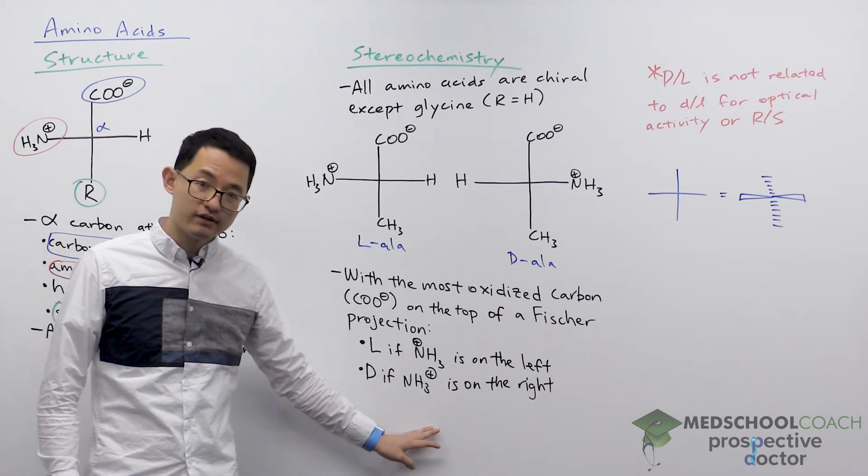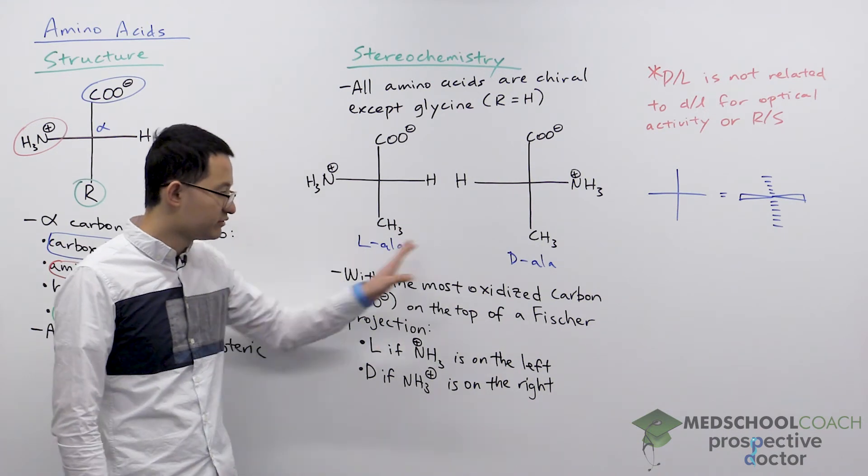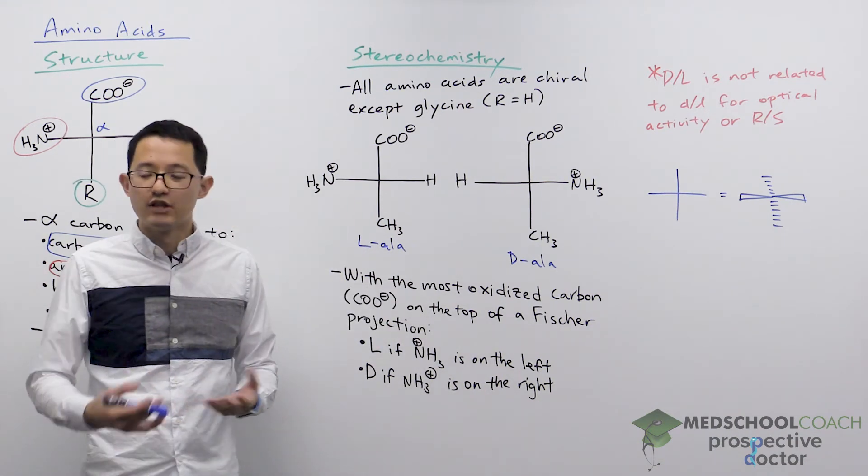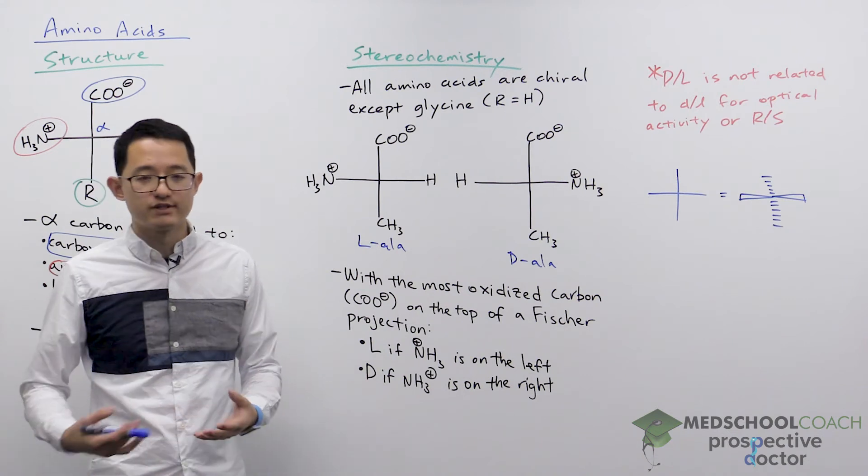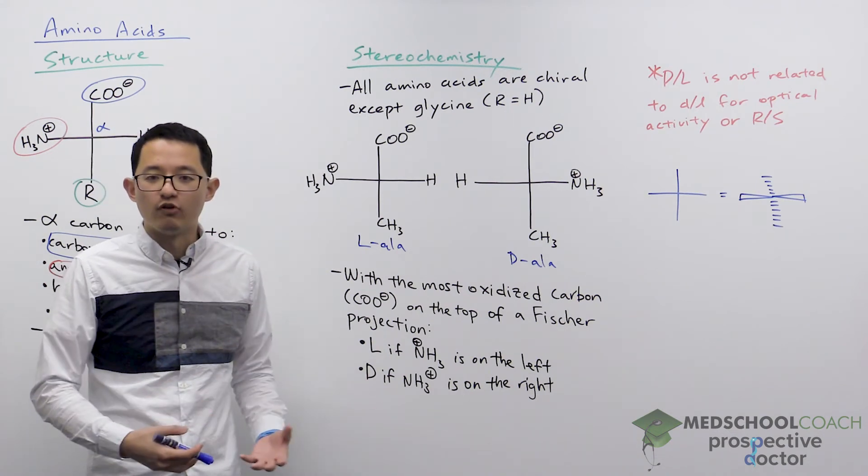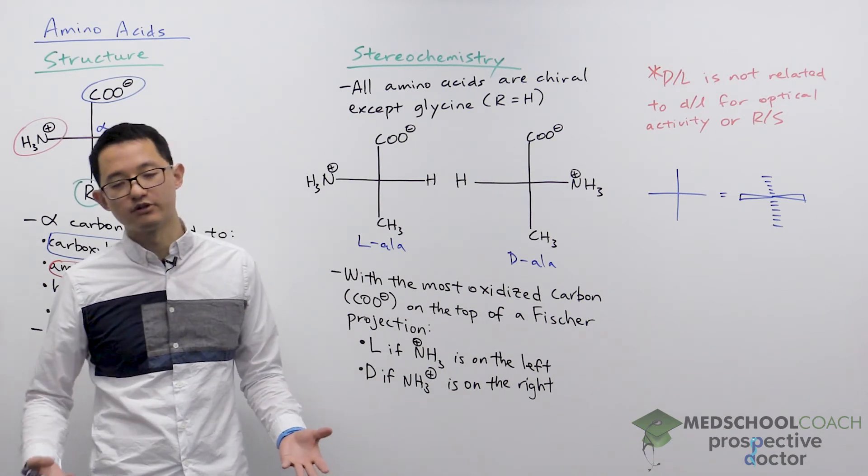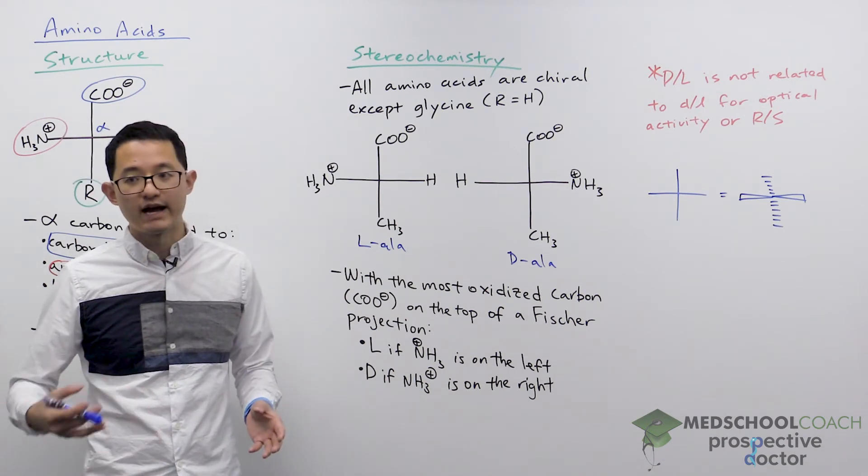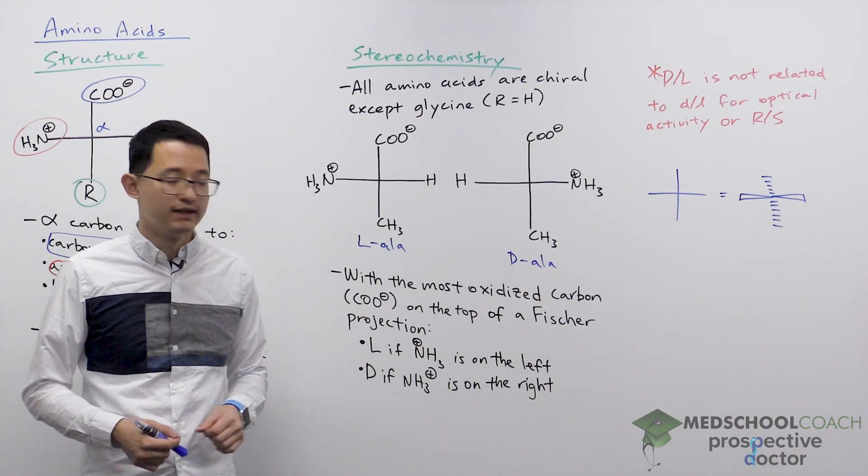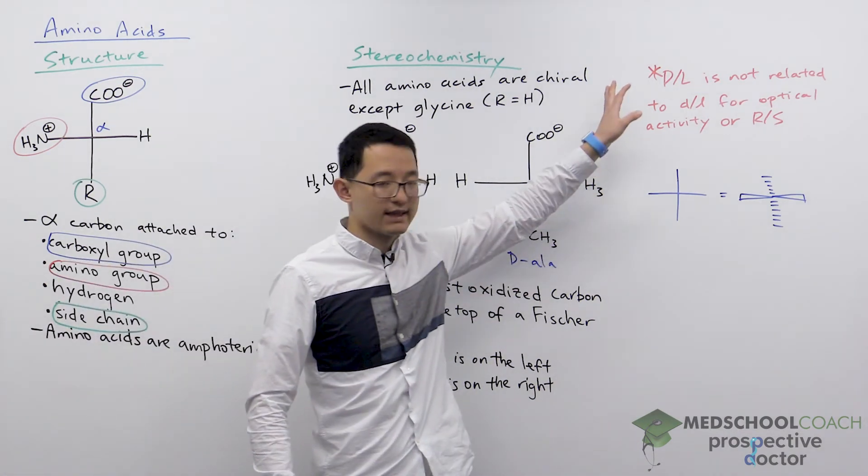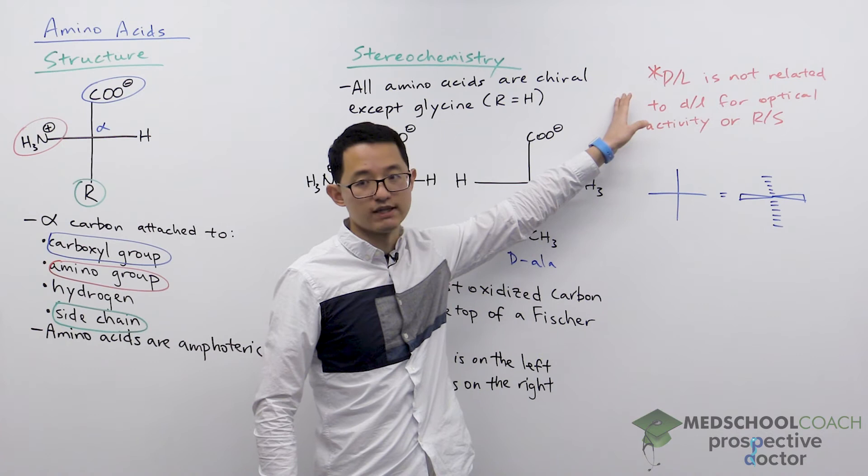Now one other thing I want to mention, this capital D and capital L might remind you of the lowercase d and lowercase l we saw with enantiomers before with optical activity. Dextrorotatory versus levorotatory for clockwise and counterclockwise rotation of plane polarized light.